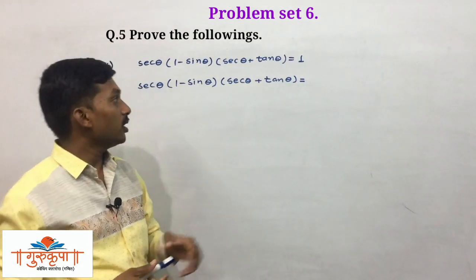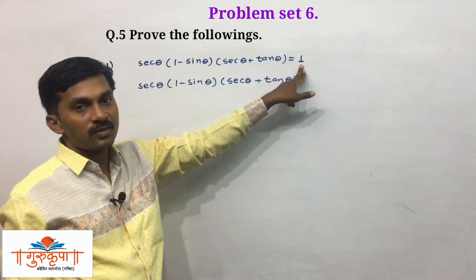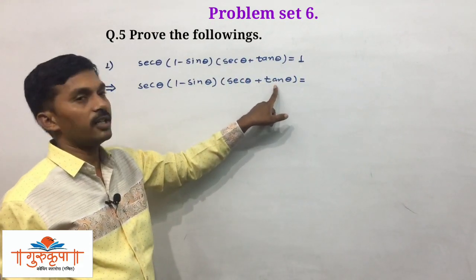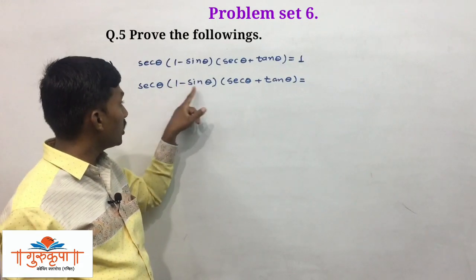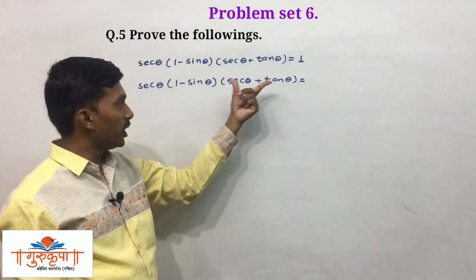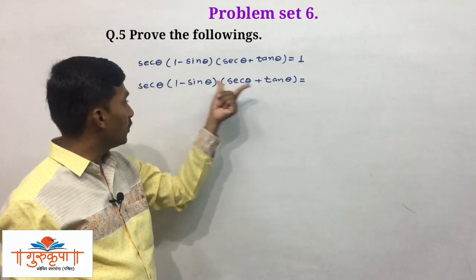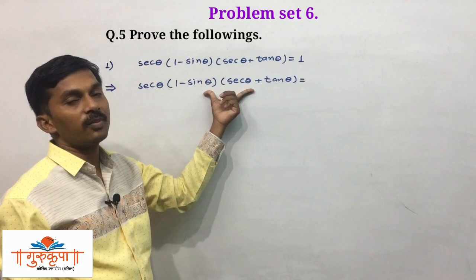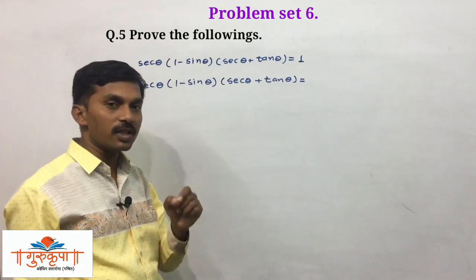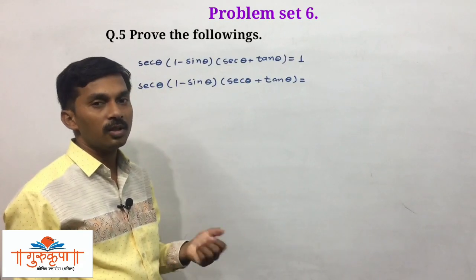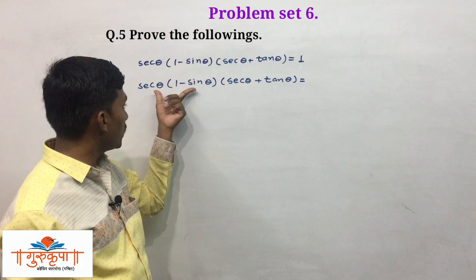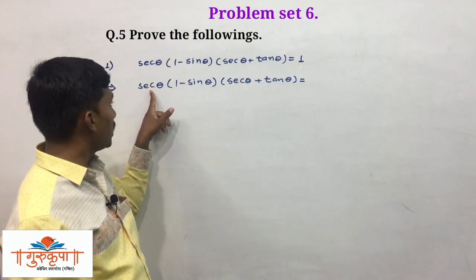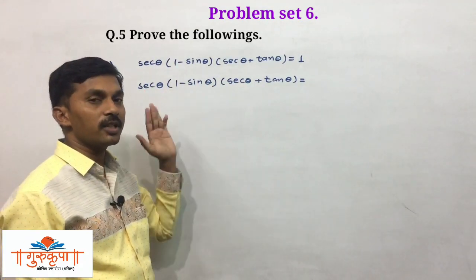In the RHS we have to get 1. Since we have sec theta plus tan theta here, if we get sec theta minus tan theta in the other bracket, then the product is sec squared theta minus tan squared theta, and that value equals 1. So we have to try to get sec theta minus tan theta in that bracket. We can easily get it by multiplying sec theta by (1 minus sin theta), which gives us sec theta minus tan theta.